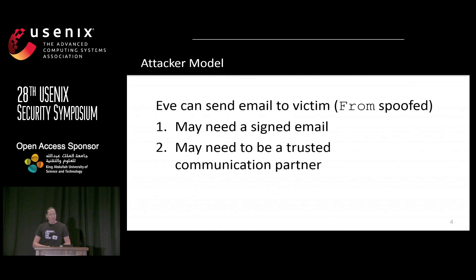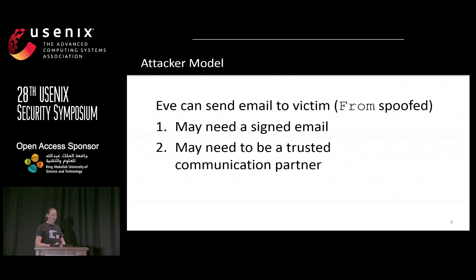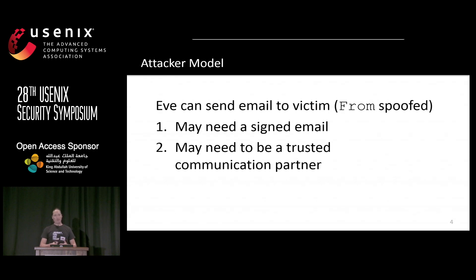Here's the attacker model. Our attacker Eve can send a spoofed email to the victim and set arbitrary header data, including the From header. One reason to use digital signatures in email is to get sender authenticity, which standard email doesn't have. For some attacks, Eve may have already obtained a signed message from the victim to be impersonated, or may have had previous communication with the victim.